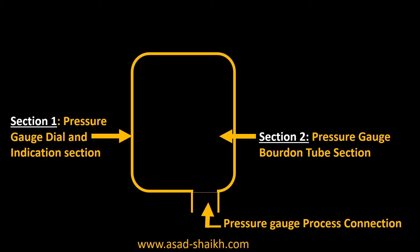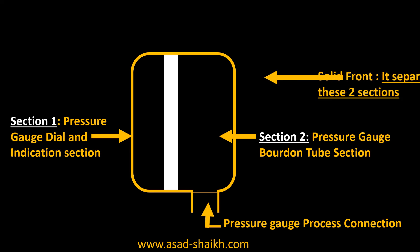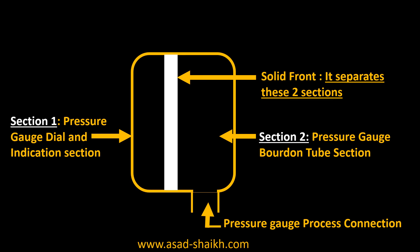So for such high pressure applications, we use the concept of solid front. As the name suggests, the solid front acts as a wall in between section 1 and section 2. This solid front separates these two sections such that the process fluid, in case of a hazard, would not enter into the dial gauge indication side.